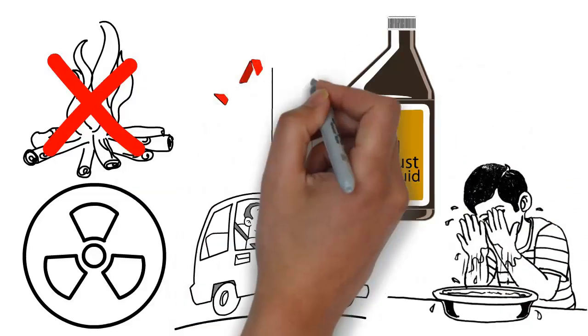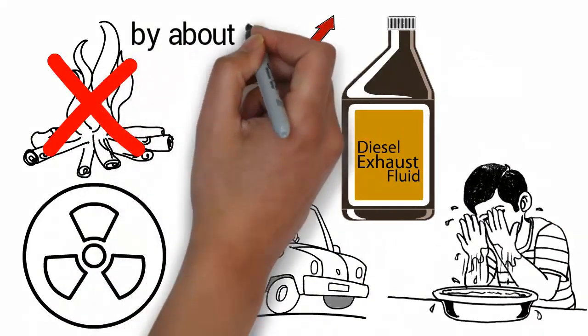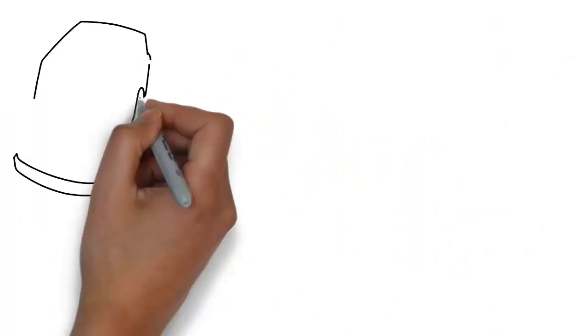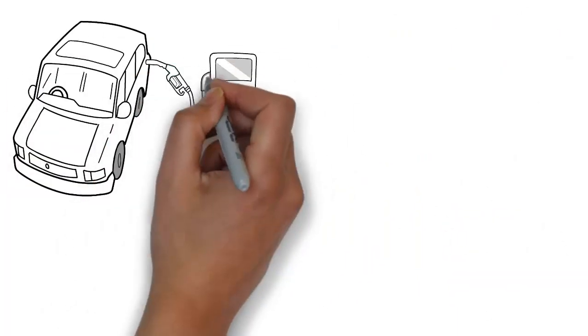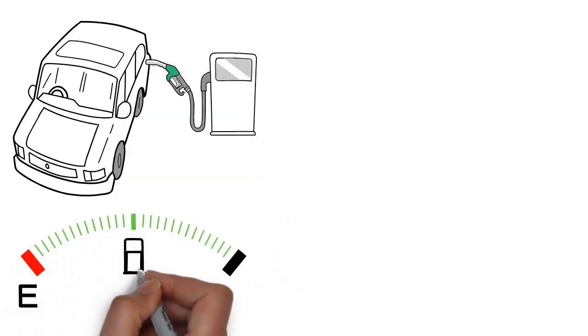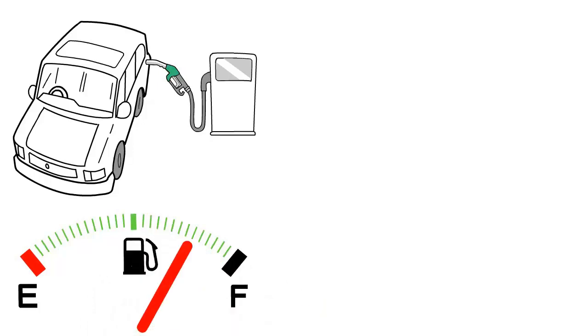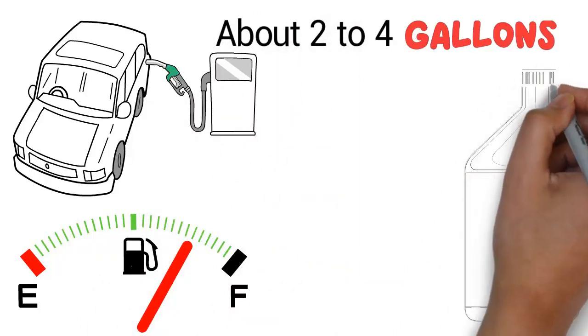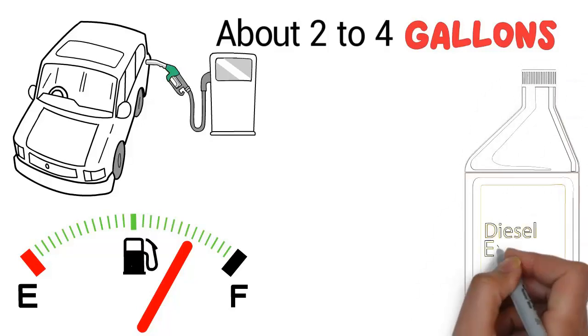DEF has been shown to improve fuel economy by about 5% and uses the same diesel fuel more efficiently. You won't have to refill your DEF tank every time you fill up with fuel. Typically, the consumption rate is 2% to 4% of diesel consumption. About 2 to 4 gallons of diesel exhaust fluid are injected into the exhaust stream for every 100 gallons of diesel.